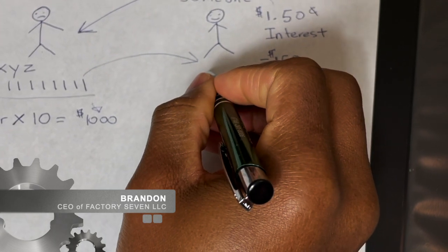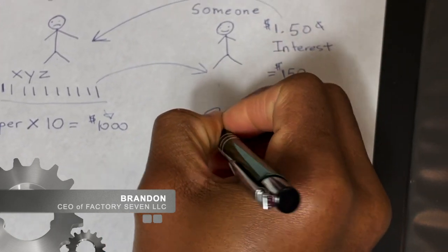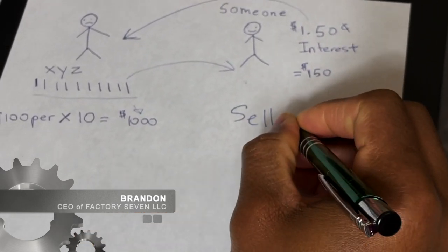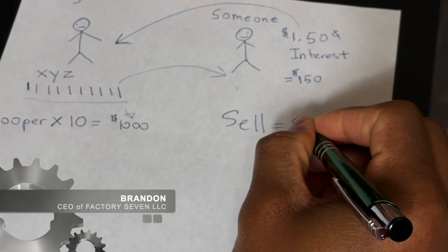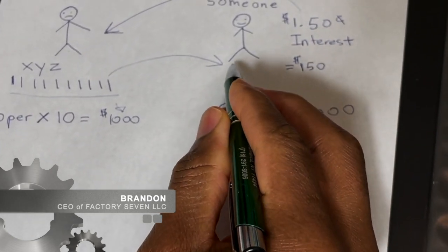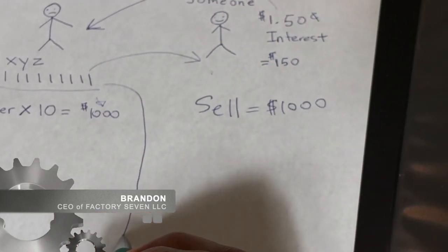This person now has your shares. As soon as they get the shares, they sell it. Boom. Sell your shares on the market for $1,000. So this person now has $1,000 in their possession.